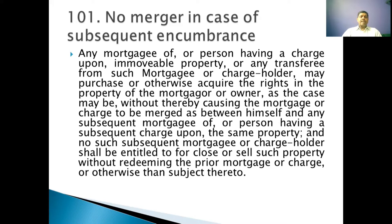If a charge is created, it can be either by operation of law or by act of party. If the charge is cleared, only then the owner of the property has a right to sell the property. Unless these two things are not done, the subsequent encumbrances cannot be created — there can be no merger of these two things. You cannot merge the mortgage or the charge. This is what Section 101 speaks about.